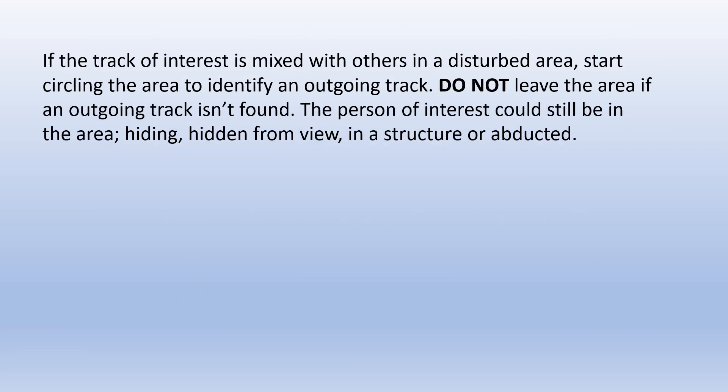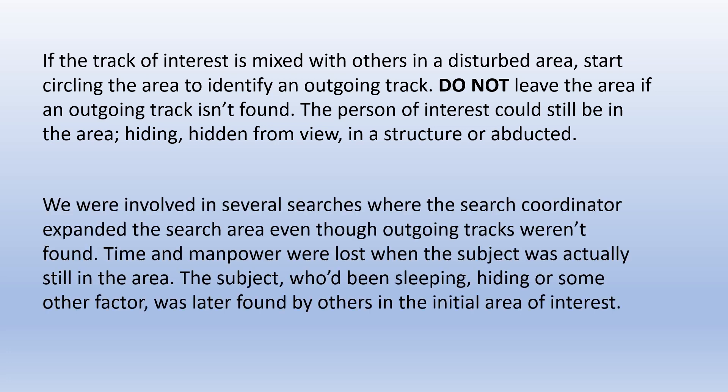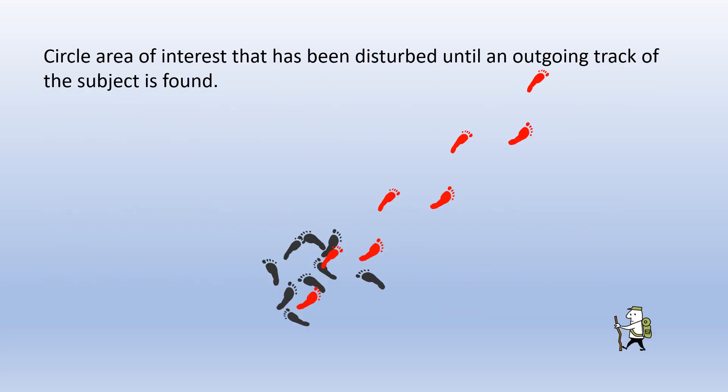If the track of interest is mixed with others in a disturbed area, start circling the area to identify an outgoing track. Do not leave the area if an outgoing track isn't found — the person of interest could still be in the area, hiding, hidden from view, in a structure, or has been abducted. We were involved in several searches where the coordinator expanded the search area even though outgoing tracks weren't found, and time and manpower were lost when the subject was actually still in the area, later found hiding or sleeping.